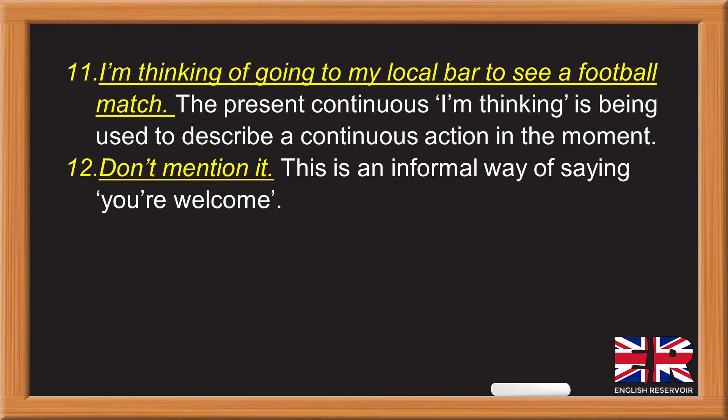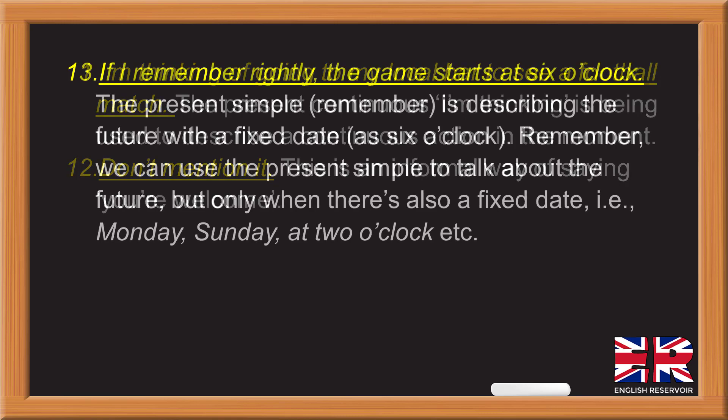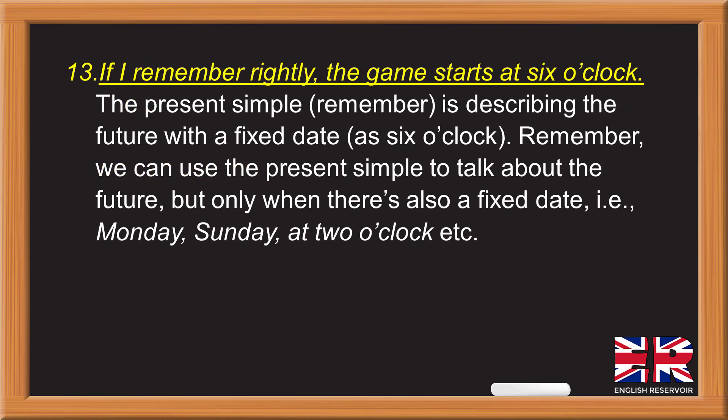Eleven: 'I'm thinking of going to my local bar to see a football match.' The present continuous 'I'm thinking' is being used to describe a continuous action in the moment. Twelve: 'Don't mention it' — this is an informal way of saying 'you're welcome.' Thirteen: 'If I remember rightly, the game starts at six o'clock.' The present simple 'remember' is describing the future with a fixed date — six o'clock. Remember, we can use the present simple to talk about the future, but only when there is also a fixed date, such as Monday, Sunday, at two o'clock, etc.